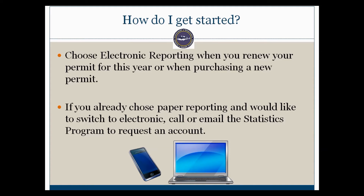If you've already chosen paper reporting and would like to switch to electronic, please call or email the statistics program to request an account. Once you've requested an account, you'll receive two emails. The first will indicate that we've switched you over to electronic reporting, and the second will include your account information such as your login credentials, information about the program, links to the website, and step-by-step instructions on how to enter a Did Not Fish report.